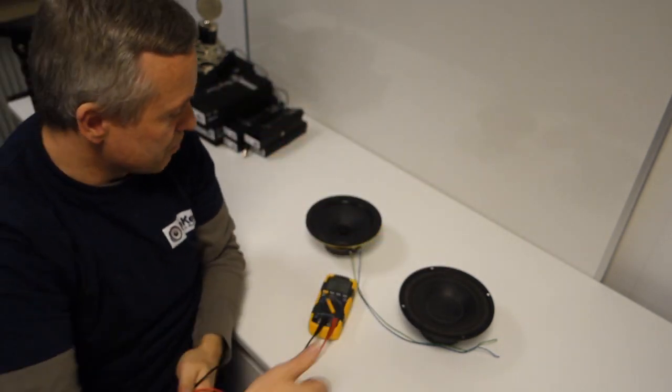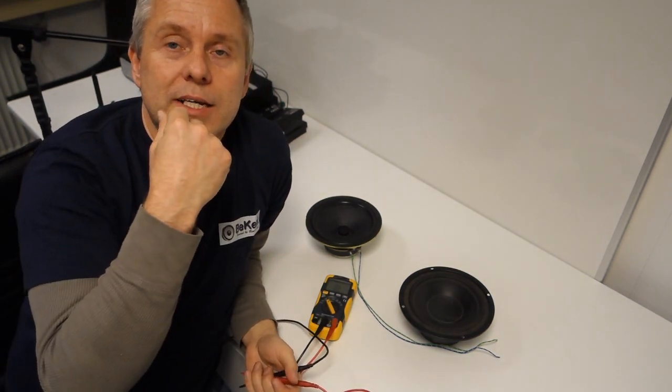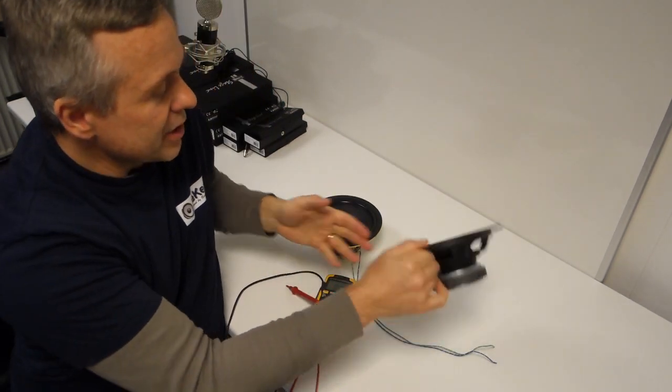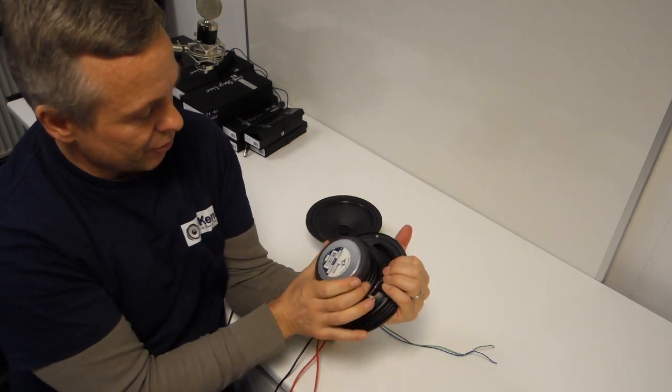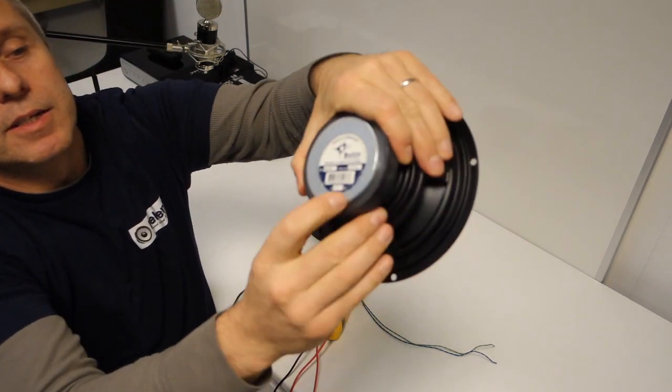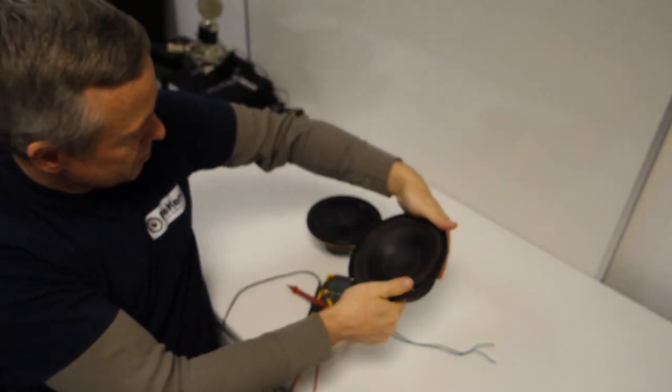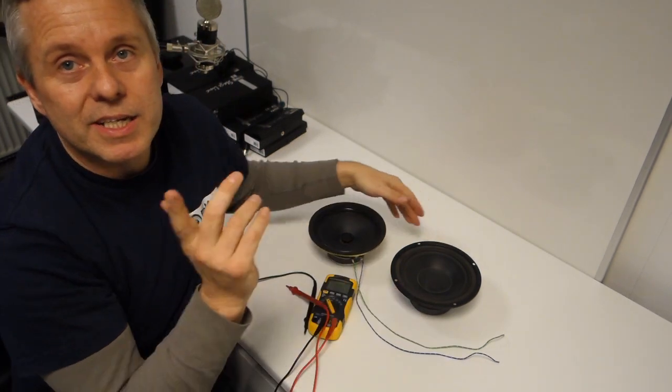So now we're ready to measure. What you need to know is you can see on the back of the driver what impedance it is, and you'll see an ohm sign. There it says eight ohms. It doesn't always say that.